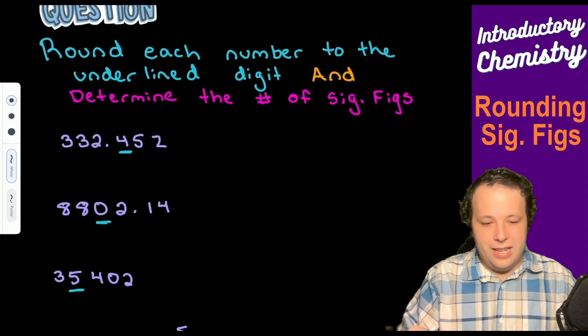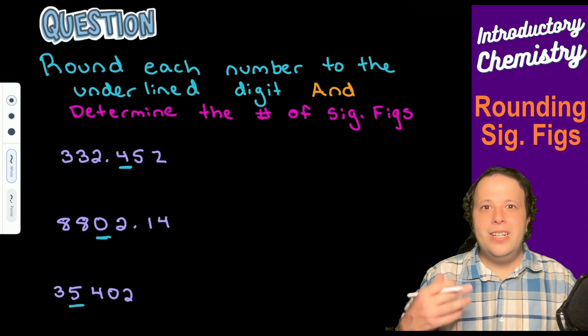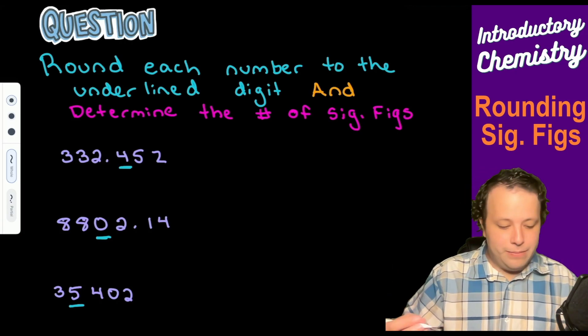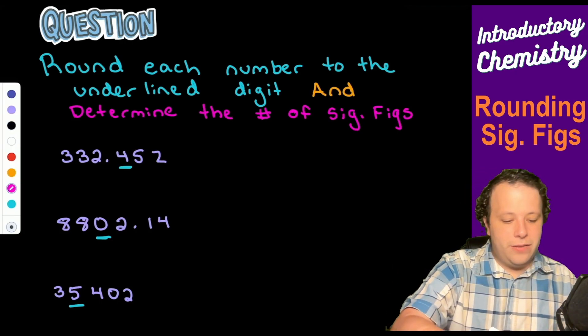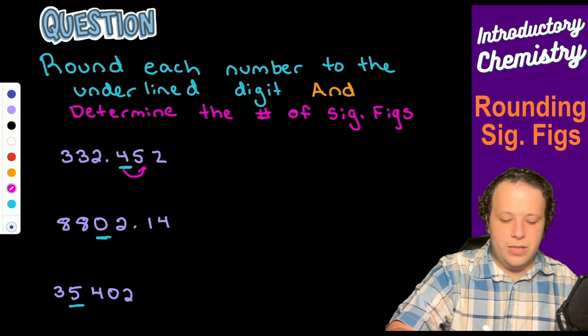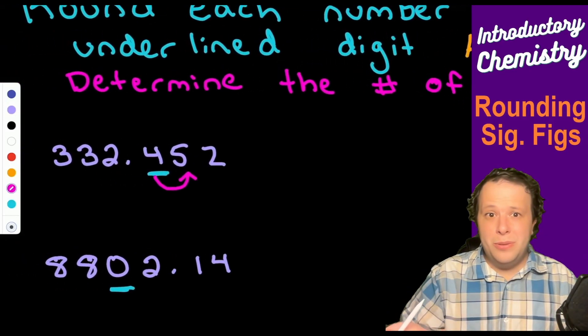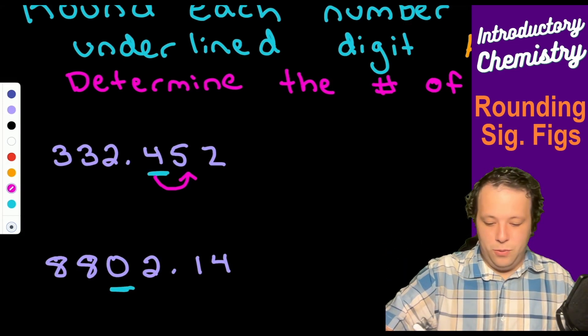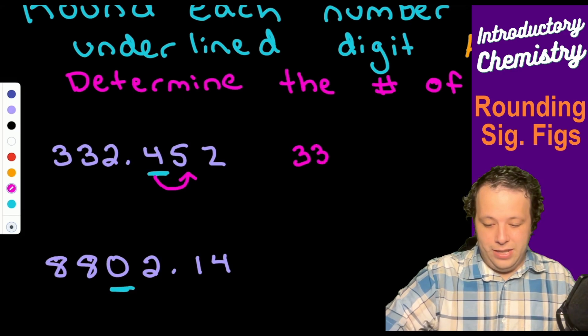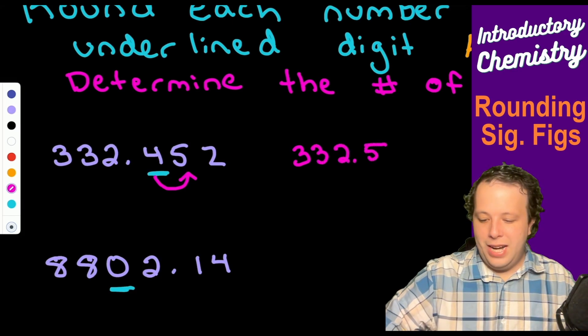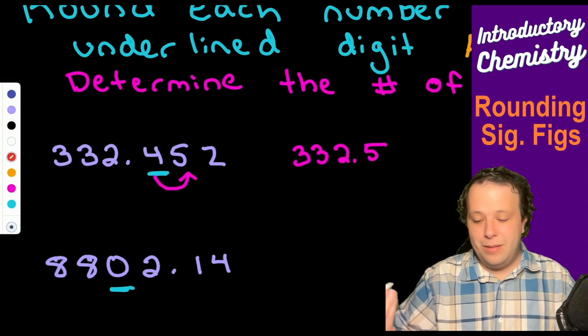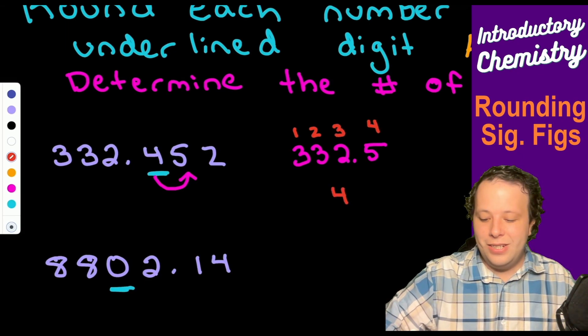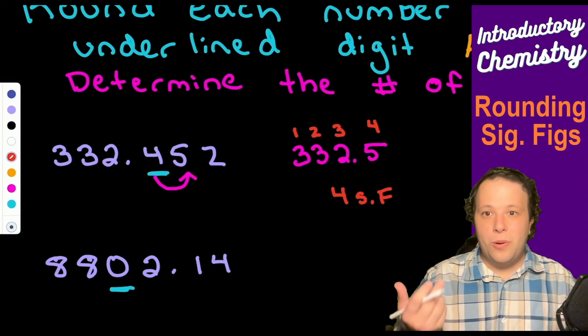Let's practice this again to wrap up the video. Round each number to the underlined digit and determine the number of significant figures. If we look at the first one, we have 332.452, the five is up there, so five through nine you round up. We're going to make 332.5 our number because that four rounds up. If we count sig figs, this would be a total of four non-zero digits, so we have four significant figures.